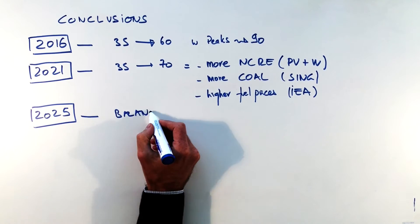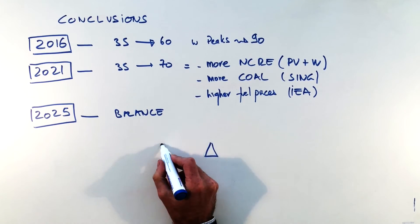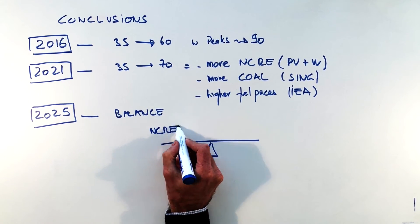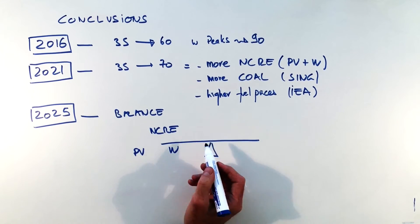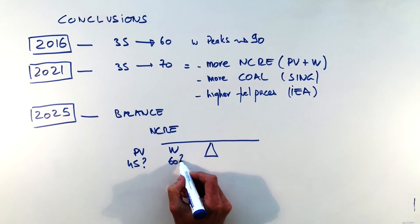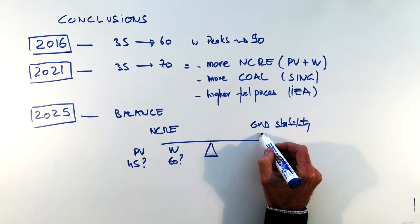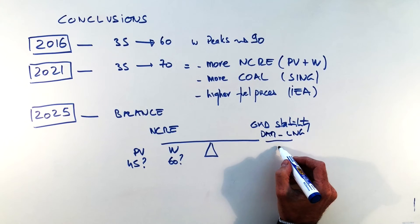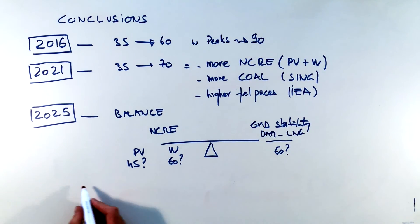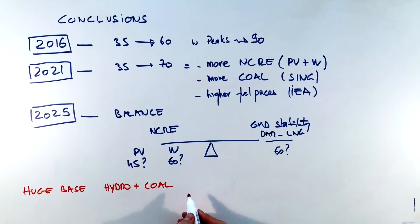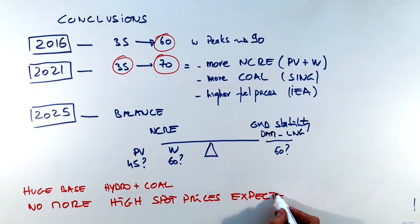2025 will depend, it's going to be a balance of technologies between more renewables in the system, PV and wind with prices oscillating between 45 and 60 eventually and grid stability technologies which are going to be dam, LNG or eventually storage technologies at 60 plus dollars per megawatt hour. So let's keep in mind we have a huge base of hydro and coal that justify prices between 35 and 60 eventually 70 and definitely no more high spot prices are to be expected.